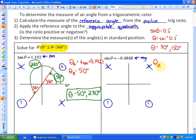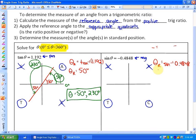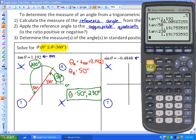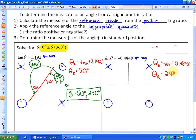To figure out the reference angle, what we always do is take the inverse trig function of the positive ratio. So I'm going to take the sin inverse of 0.4848. That's going to give me the reference angle, and that is roughly 29 degrees.